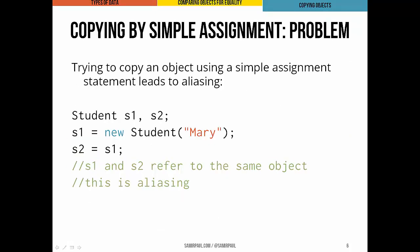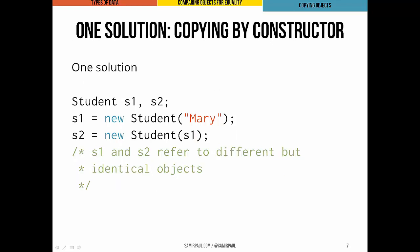Now we'll quickly revisit a problem encountered earlier in the course: copying objects. Trying to copy an object using a simple assignment statement — the single equals operator — can cause problems. Looking at this code segment, this creates two references to a single student object when what we really wanted was to copy the contents of one student object to another. We have two student variables, s1 and s2; s1 gets a new student object with the name Mary, and we're just pointing s2 at the same thing. This is aliasing — a classic example — and is likely not intentional.